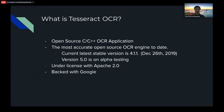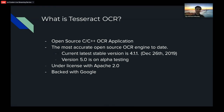Tesseract OCR is an open source C and C++ OCR application. After you download and install it on your computer, you can use it directly. The latest stable version is 4.1.1, released on December 26th, 2019. Version 5.0 is in progress, but use it at your own risk as it's still in alpha. It's licensed under Apache 2.0 and backed by Google.